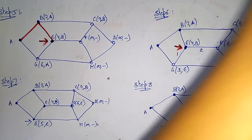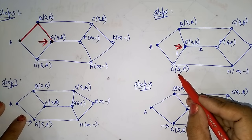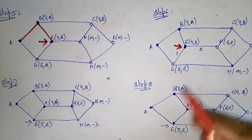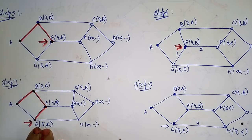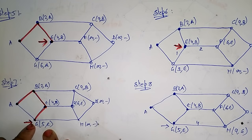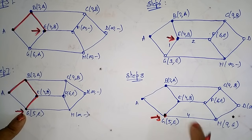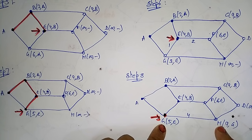In Step 7, the costs are F=6 and G=5. G has the smallest label, so mark G as permanent. G becomes the new working node. In Step 8, examine G's adjacent nodes — E is already visited, so we go to H. The cost of G is 5 and the distance from G to H is 4, so 5+4=9 (labeled 9,G).